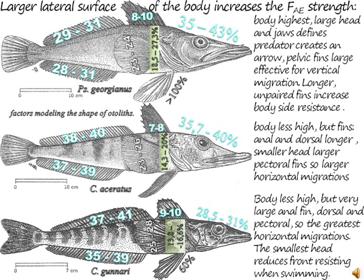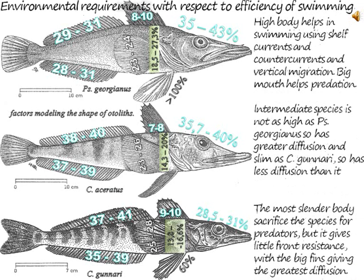Factors modeling otolith shape: the high body of Georgianus, its large head and jaws defining it as a predator, creates narrow pelvic fins effective for vertical migration. Longer unpaired fins increase lateral body resistance. Aceratus has a less high body but longer anal and dorsal fins, a smaller head, larger pectoral fins, enabling greater horizontal migrations. Gunnari has a less high body with very large anal, dorsal, and pectoral fins, giving the greatest horizontal migrations and smallest head reducing frontal resistance. Environmental requirements with respect to swimming efficiency: the high body of Georgianus helps in swimming with shelf currents during vertical and horizontal migration; big mouth helps predation.